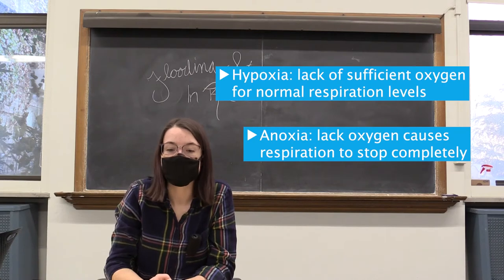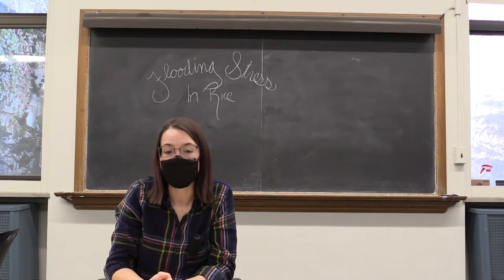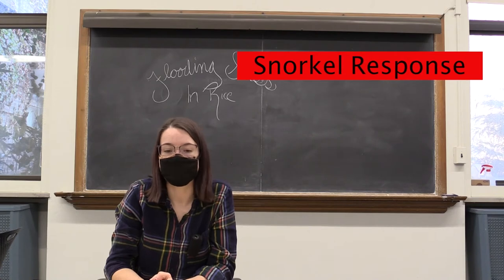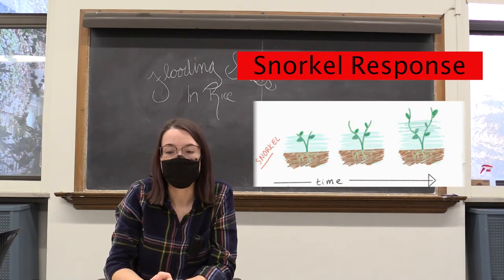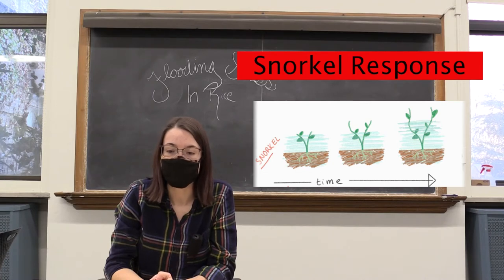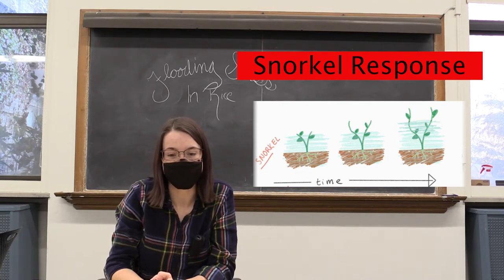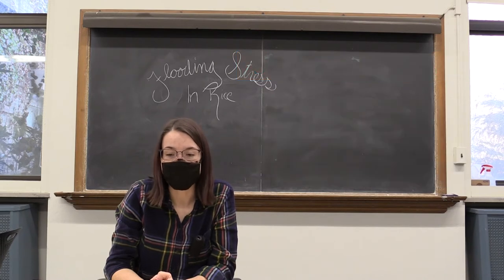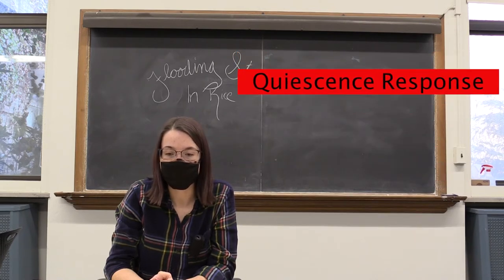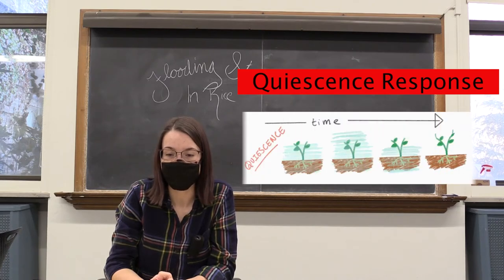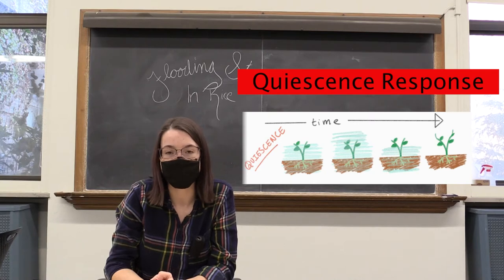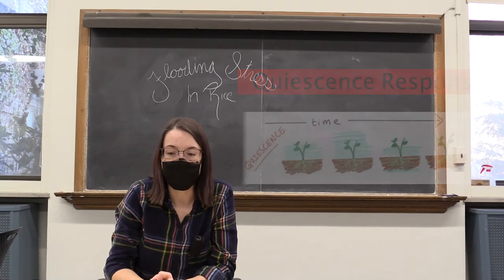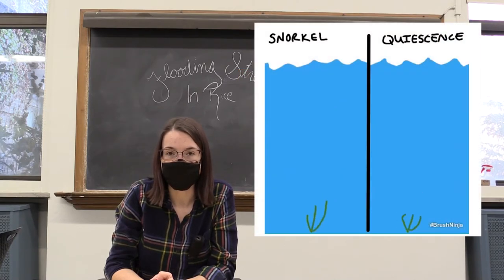There are two main physical responses that plants can have to flood stress. One is the snorkel response, which, as its name implies, involves the plant stretching above the water surface to reach air. Seeds will usually choose this response, but mature plants can also increase their growth rate in order to act as a snorkel. The second response is called quiescence, which is when the plant slows down its metabolic activities and growth as much as possible so that it can survive under the water in the hopes that the flood will pass.